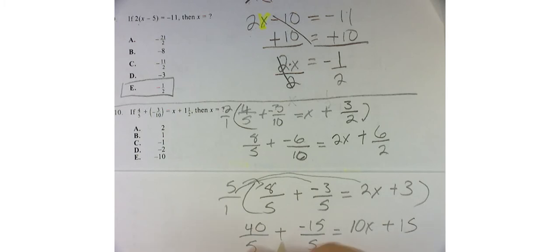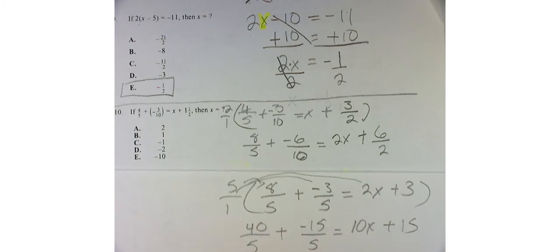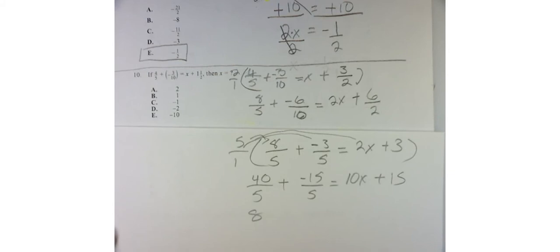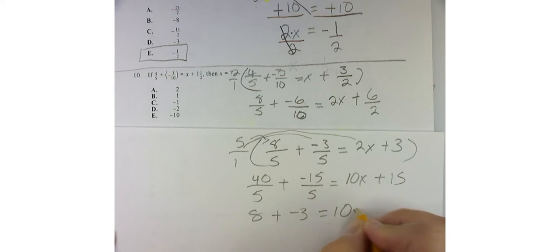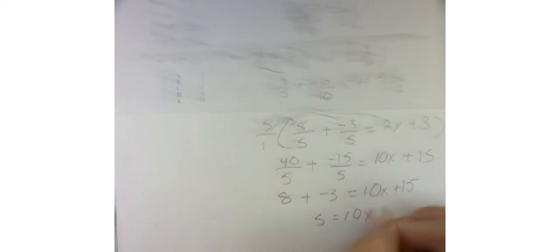Hey, these reduce. I've got 8 plus negative 3 is equal to 10x plus 15. So 8 minus 3 is actually 5 equals 10x plus 15. So far, so good.